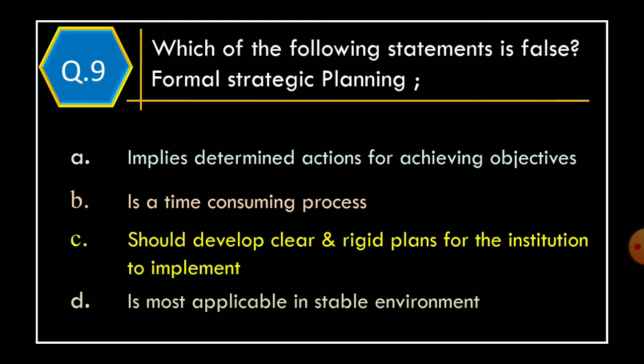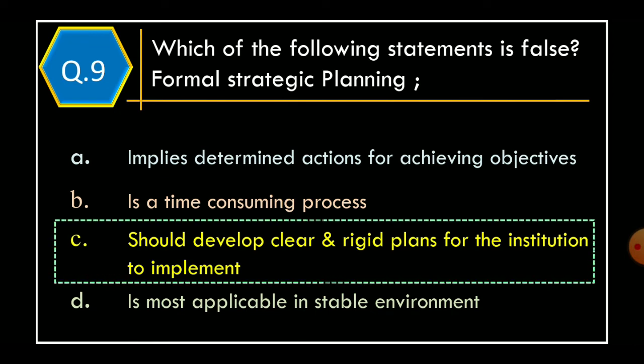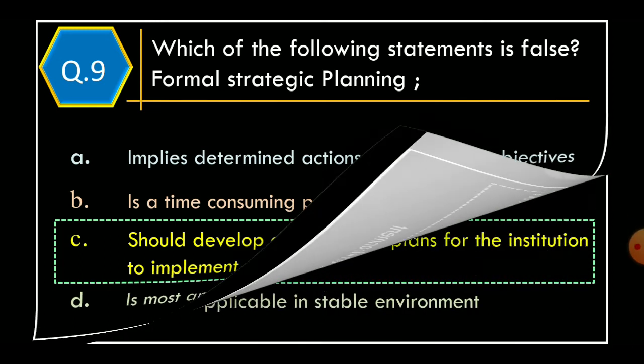Question 9. Which of the following statement is false? Formal strategic planning: Option A: Implies determined actions for achieving objectives. Option B: Is a time consuming process. Option C: Should develop clear and rigid plans for the institution to implement. Option D: Is most applicable in a stable environment. The correct option is Option C: Should develop clear and rigid plans for the institution to implement.